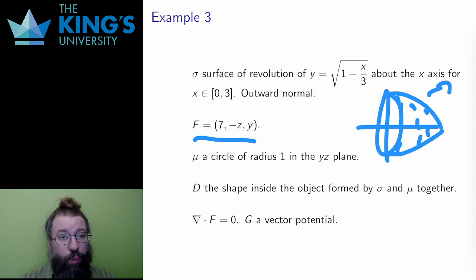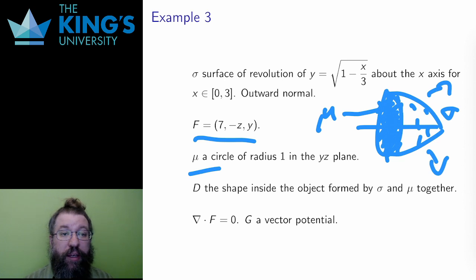I'm going to let mu be another surface, the circle of radius 1 in the yz plane. This second surface closes off the opening of the first surface. So between them they make a closed surface. And finally notice that this field has zero divergence.